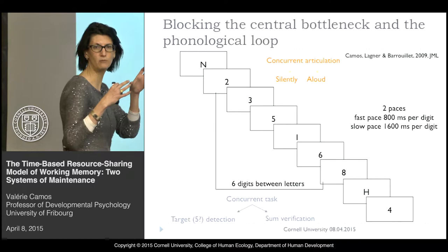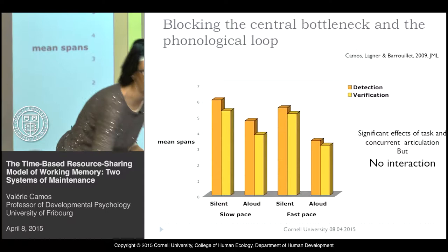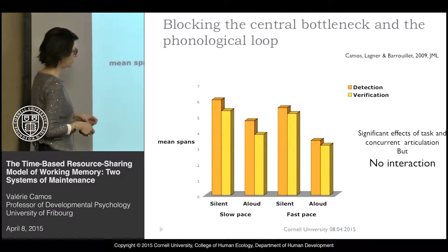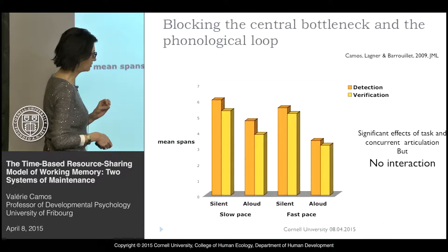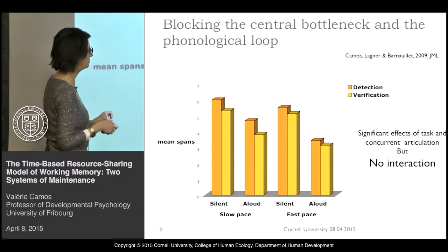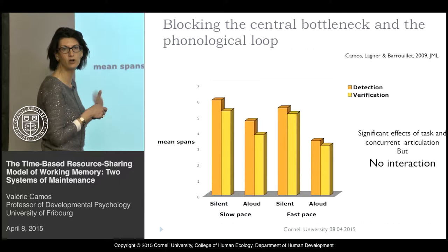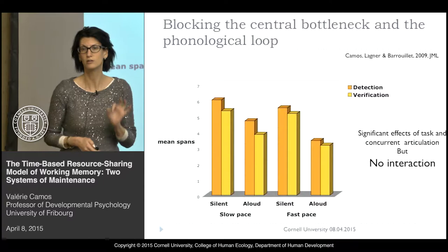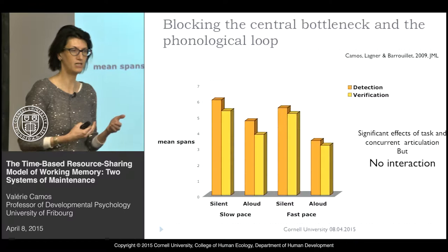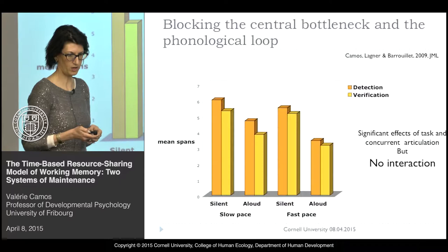What we observe is the number of letters recalled, and for slow and fast pace we have exactly the same pattern, so it's quite resistant. First, you have the classic effect of articulatory suppression on recall — when people have to do something aloud, you have a reduction of recall. We also replicate the cognitive load manipulation: when it's more demanding, you have a decline in performance. But there is never any interaction between the two manipulations. This was the first idea that the two systems are really independent and do not work interdependently on the memory trace.